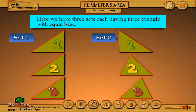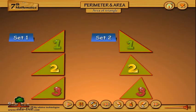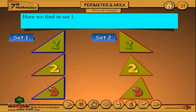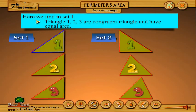Here we have three sets each having three triangles with equal base. Here we find in set 1, triangles 1, 2, and 3 are congruent triangles and have equal area.